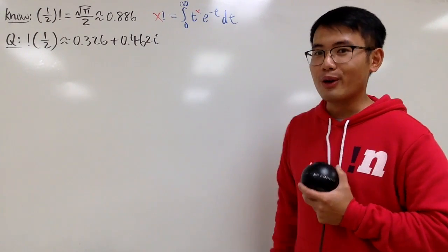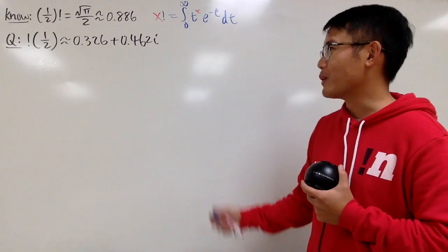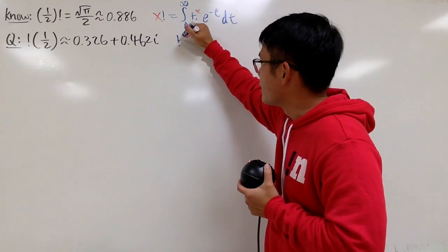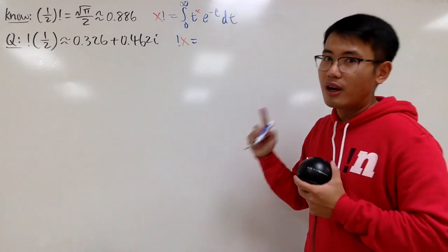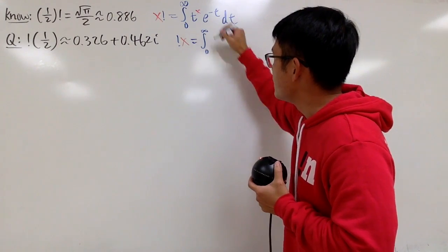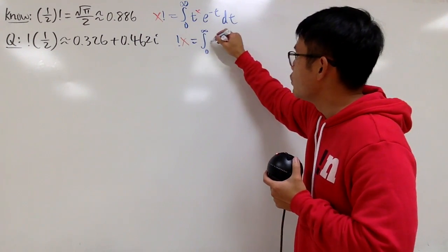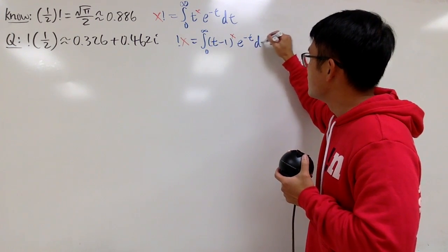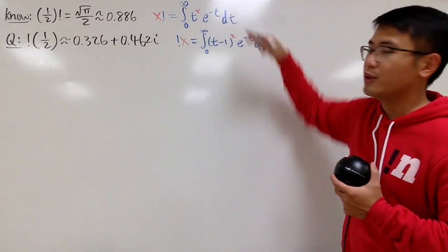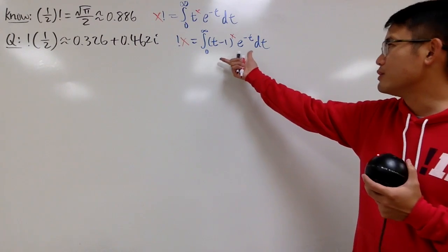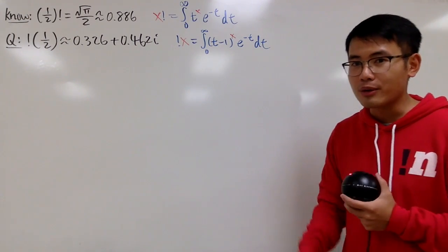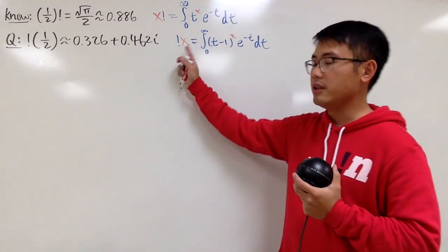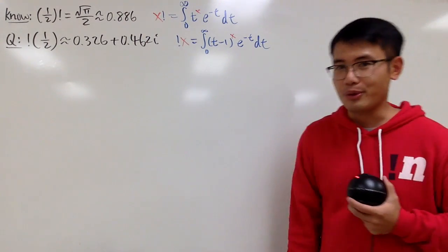For sub-factorial, we have a similar integral that will take care of this as well. So let me write it down. Sub-factorial of x equals the integral from 0 to infinity of (t minus 1) raised to the x power, times e^(-t) dt. As you can see, they are really, really similar. Of course, I haven't shown you why this is true, but maybe you can try it on your own — you can check out my other video where I talk about the recursive formula for the sub-factorial, or maybe you can prove this on your own.